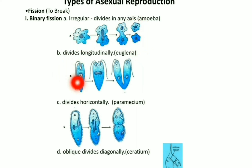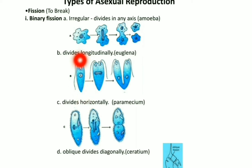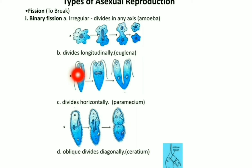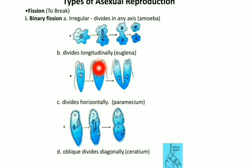Euglena shows longitudinal fission. In this, first the flagella divides, then the nucleus divides, and then cytoplasm division occurs, and this division happens longitudinally.